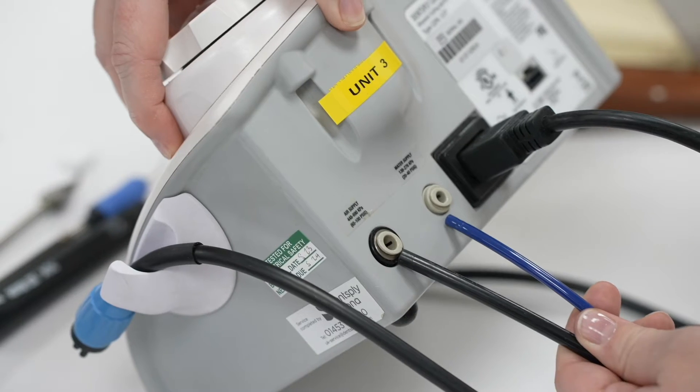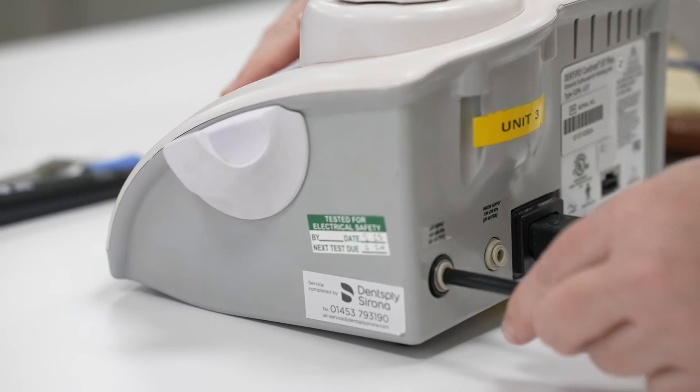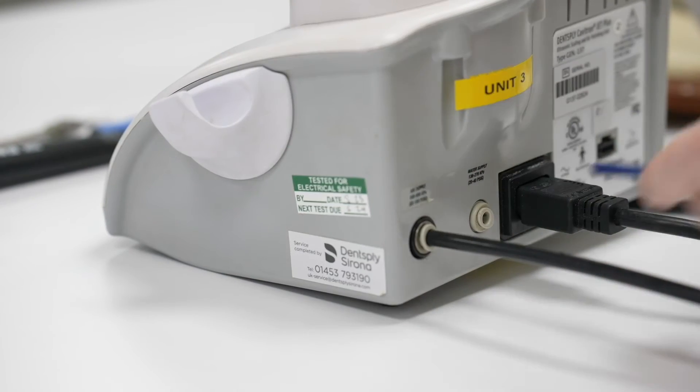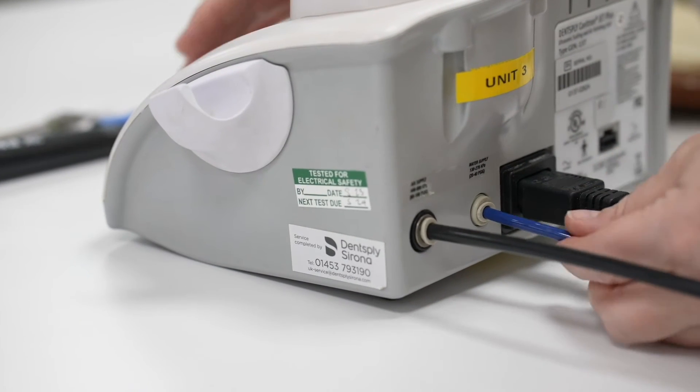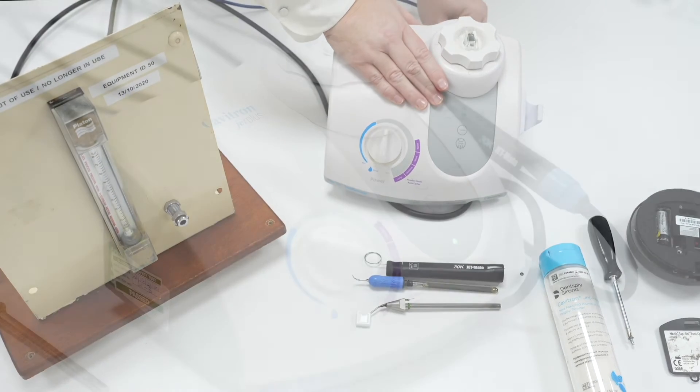Insert them both into the back of the Cavitron. It is very important that the water line and the air line are not mixed up. If accidentally mixed up you'll flood the unit and void the warranty which will cost a few hundred pounds to repair.